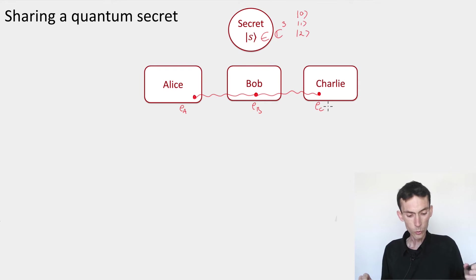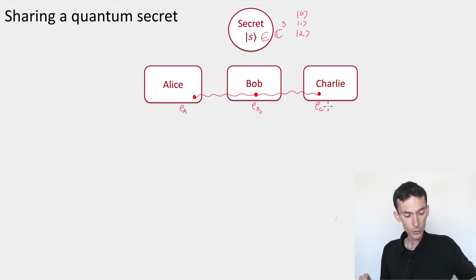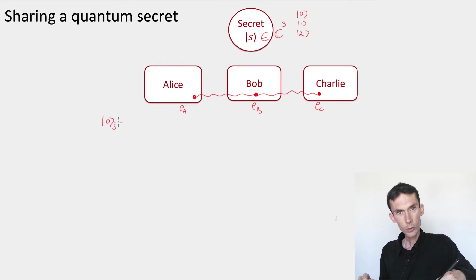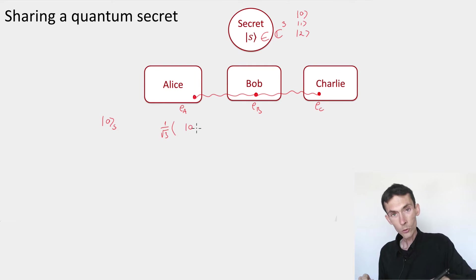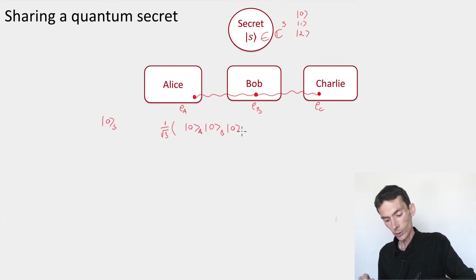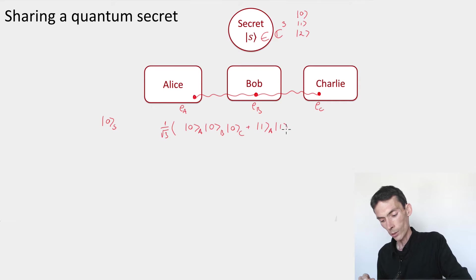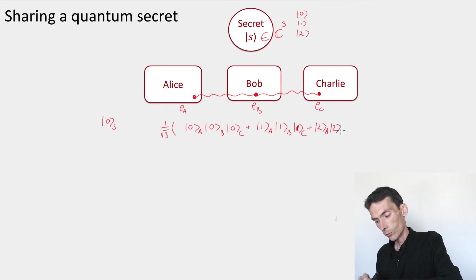Here's a scheme that will let you do this. I'll explain the encoding on basis states first. Let's take secret equal to |0⟩. We're going to share this secret using the state with a 1/√3 normalization, and then a superposition of Alice having 0, Bob having 0, Charlie having 0; or Alice, Bob, and Charlie each having 1; or Alice, Bob, and Charlie each having 2.